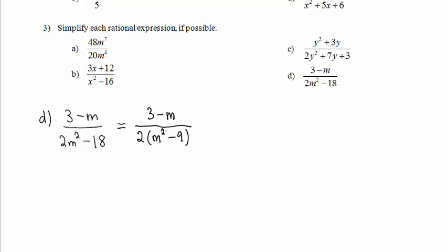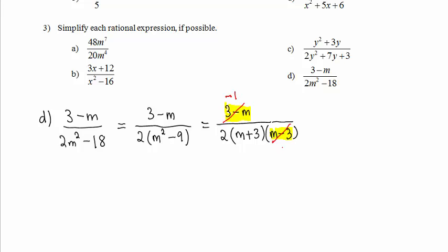The numerator cannot be factored. The denominator, however, can be factored again. It is the difference of perfect squares. It factors as m plus 3 times m minus 3. Now, 3 minus m and m minus 3 are opposites, and when you divide them down, you get negative 1 divided by positive 1. So our answer is negative 1 divided by 2 times the quantity m plus 3.